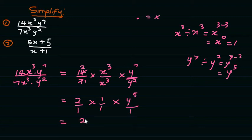That means you have 2 times y to the exponent 5 all over 1 times 1 times 1, which is 1. The answer is 2y to the exponent 5. Lana ini is our final answer.